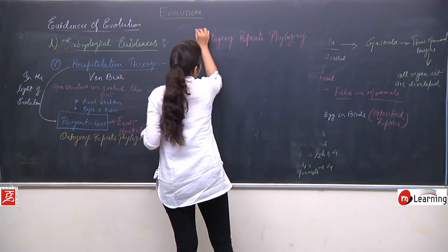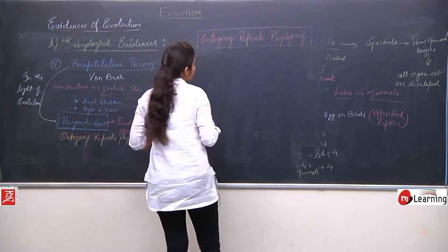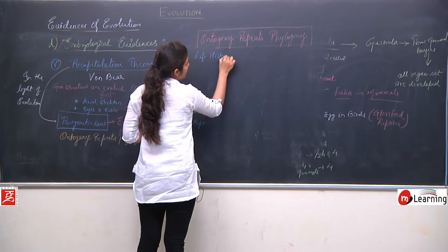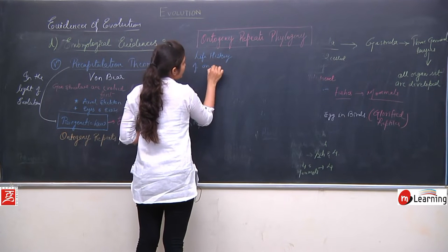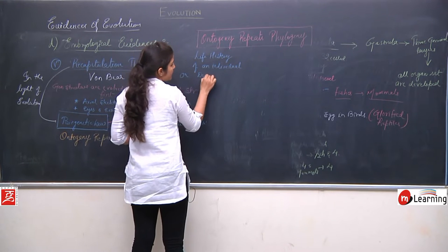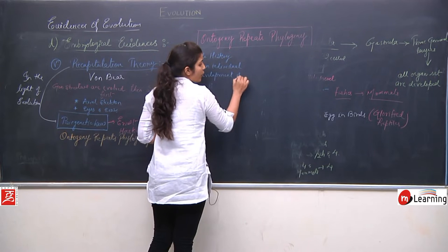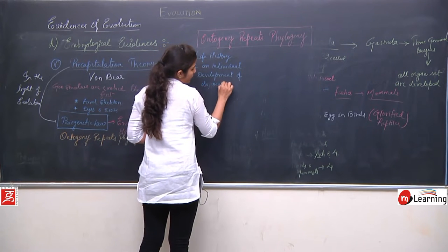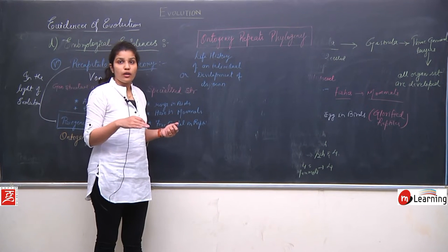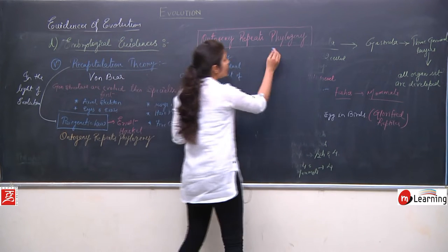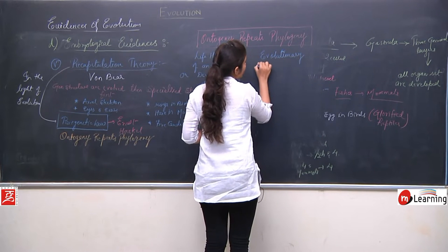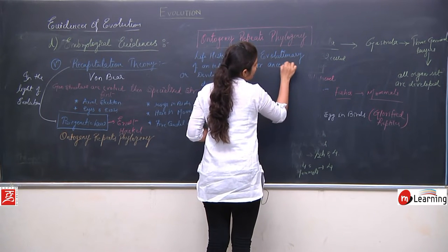He stated: ontogeny repeats phylogeny. Ontogeny means the life history of an individual — the development of its own self. The life history of an individual is called ontogeny, and phylogeny means evolutionary or ancestral history.